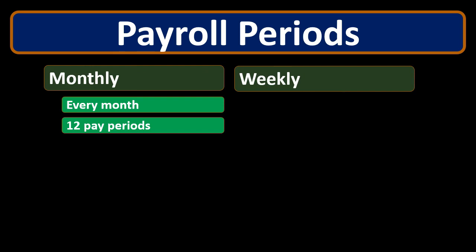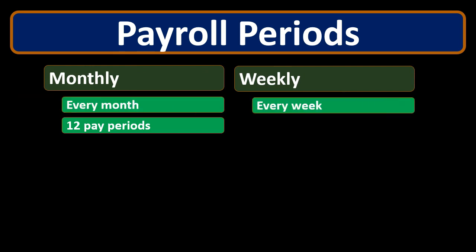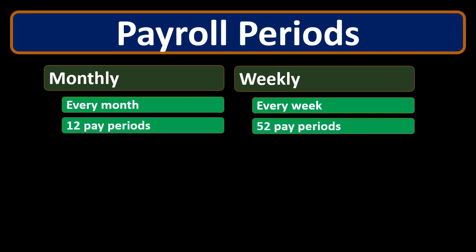So we could have weekly, which is kind of the other extreme. Weekly is, of course, every week. That would mean there are going to be 52 pay periods because there are 52 weeks in the year. Note that that number — unlike the 12 months — is not something everybody knows offhand. For payroll, it's probably worth memorizing: there are 52 weeks in a year.